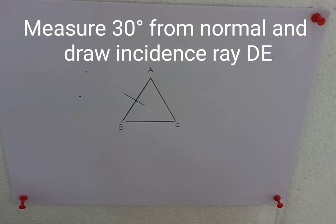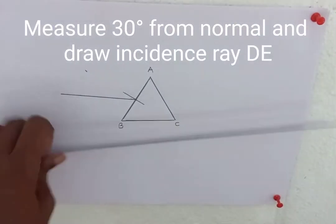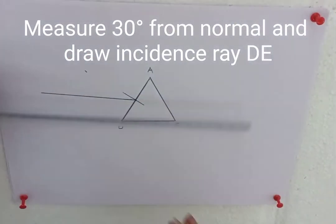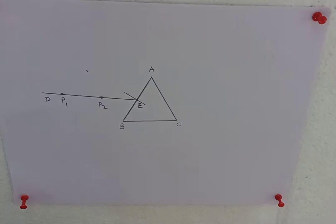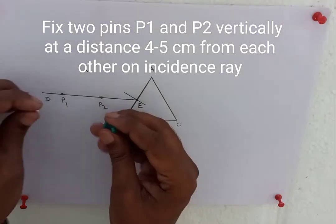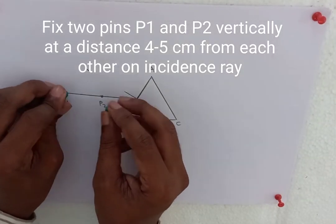Measure 30 degrees from normal and draw incidence ray DE. Take points P1 and P2 on incidence ray.